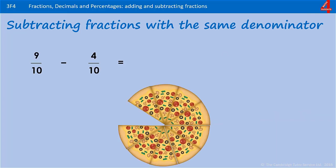Here's another one to have a go at: 9 tenths take away 4 tenths. Pause the video, have a go. Remember that the answer will have 10 as the denominator. We take 4 tenths away from the 9 tenths in the pizza.